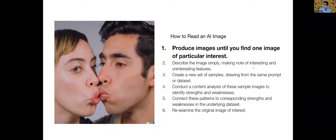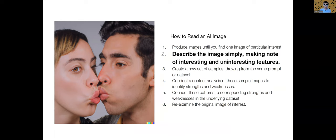So these are the steps that you've read about how to read an AI image. And I want to go through them one by one. The first step is to produce an image until you find one that interests you. In this case, this image I found fascinating. So this is what started my journey. The next step is pretty simple. Describe the image simply, making note of interesting and uninteresting features. This takes a little bit of getting used to. What exactly is an uninteresting feature?